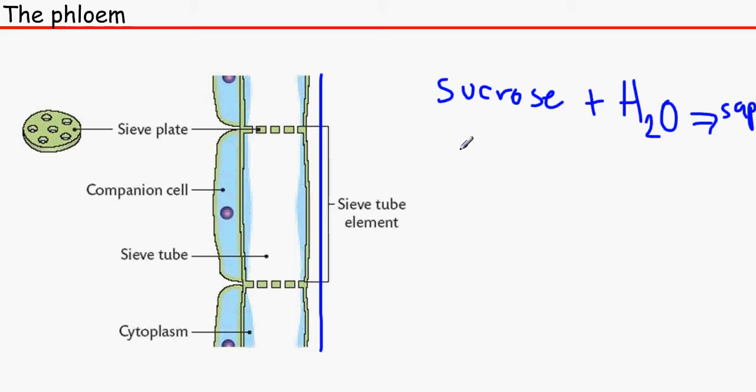The tube contains cross walls over here. So unlike the xylem, which the walls have been kind of disintegrated and it's just one long wall at the sides, it's got cross walls and that is called sieve plates, and that allows the pores for the sap to flow.